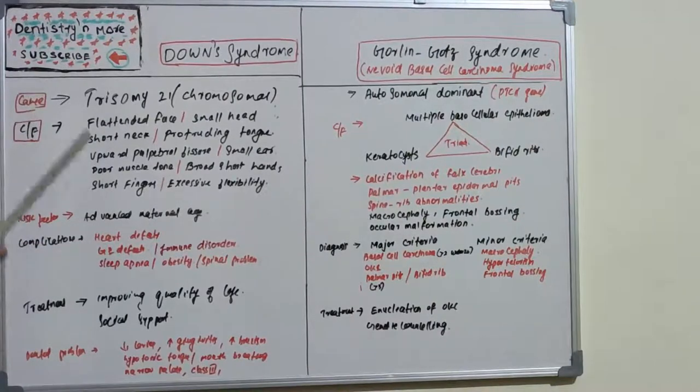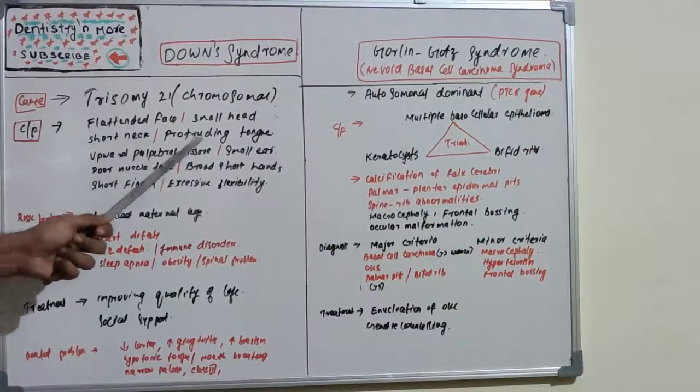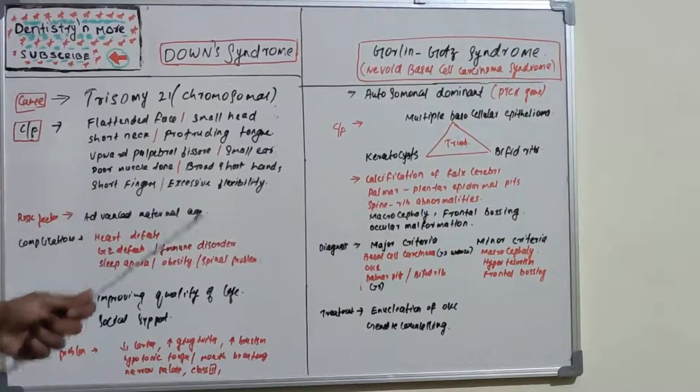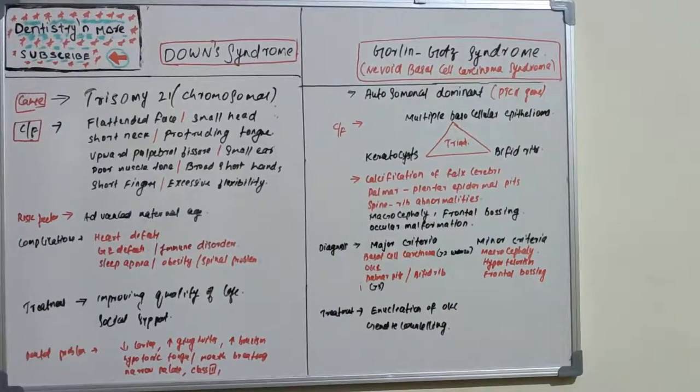The problem with chromosome number 21 presents with flattened face, small head, short neck, protruding tongue, upward palpebral fissure, small ear, poor muscle tone, broad and short hands, short fingers, and excessive flexibility.